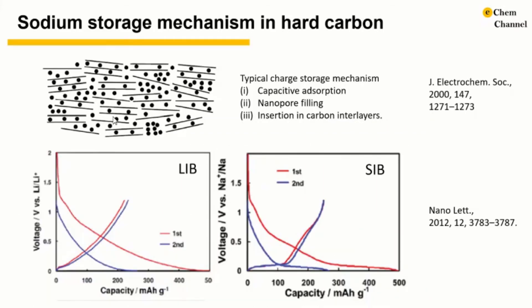Benefiting from cost-effectiveness and excellent electrochemical comprehensive performance, carbon-based materials exhibit prospective potential for industrial applications. Among all carbon materials, hard carbon is regarded as the most mature and currently the only material likely to be commercialized for the anode of the sodium ion battery. Hard carbon is a disordered carbonaceous compound and an attractive anode material for the sodium ion battery because of its large reversible capacity at low operating voltage as well as its good cycle stability.